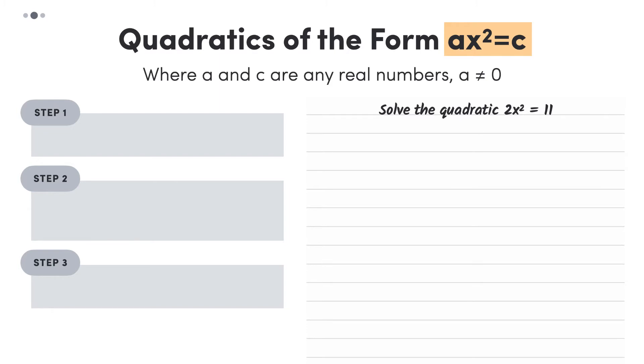The first step is to make x squared the subject. To do this, we'll divide the equation by 2, leaving us with x squared equals 5.5.